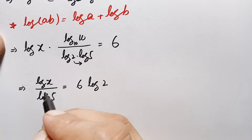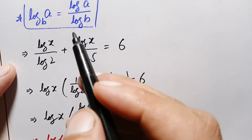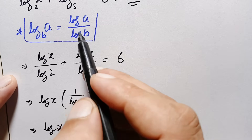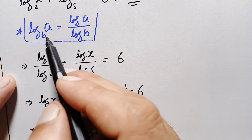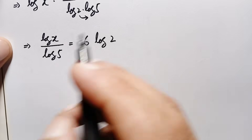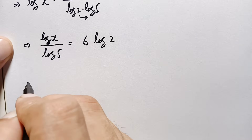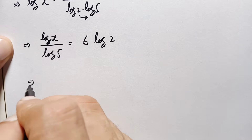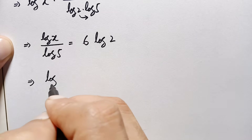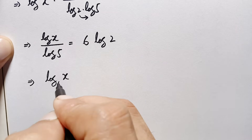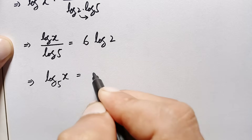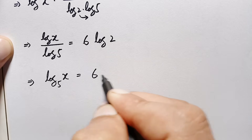In the left hand side we will use the change of base property again to convert it back. This equation simplifies to: log of x with base 5 is equal to 6 times log of 2.